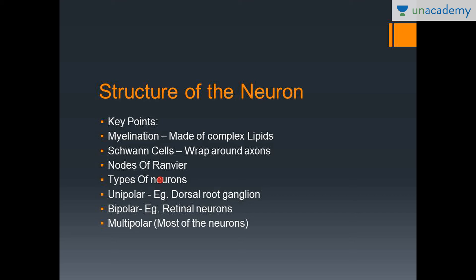There are three types of neurons based on the number of processes arising from the cell body. The unipolar neuron has a single process; an example is cells in the dorsal root ganglion. The bipolar neuron has two processes; an example is retinal neurons. The multipolar neuron has many processes and comprises most neurons in the nervous system.